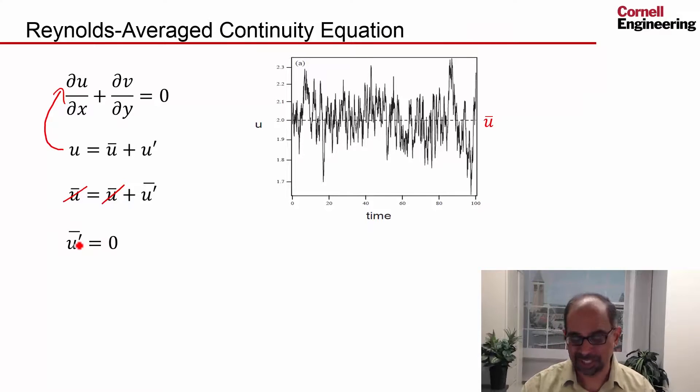Because the average of the fluctuations is zero, the Reynolds average continuity will look like that, which is the same as the original continuity equation.